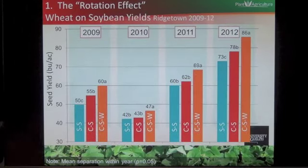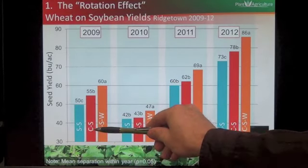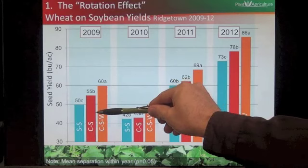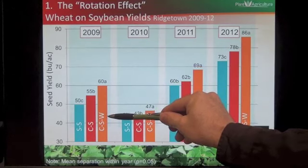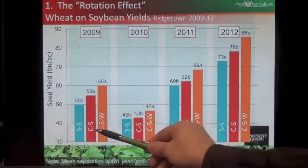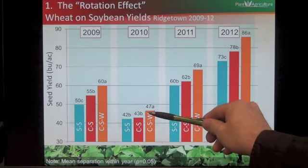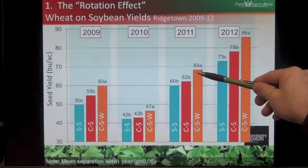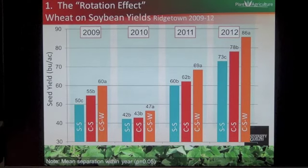Now when we look at soybeans — in 2009, this is continuous soybeans, then a corn-soybean rotation, then a corn-soybean wheat rotation. You can see when we include wheat in the rotation, yields increased by 5 bushels to the acre compared to a corn-soybean rotation. In 2010, yields are a little different, but including wheat gives a 4-bushel increase. In 2011, we had a 7-bushel increase in soybean yields when wheat is in the rotation. And in 2012, we have an 8-bushel increase in soybean yields when wheat is included.